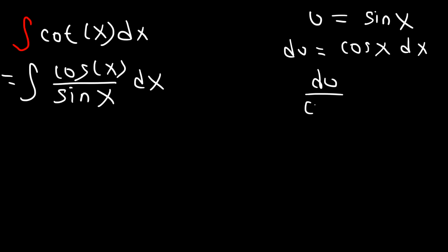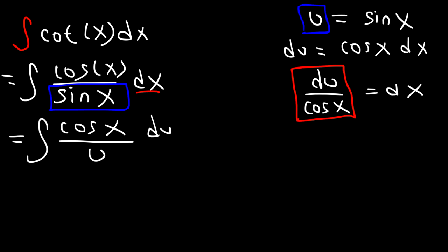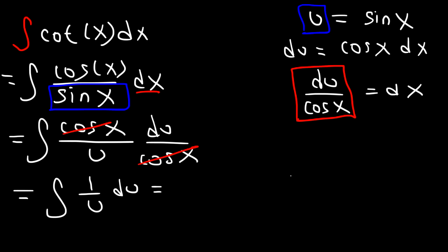Solving for dx gives du divided by cosine. Let's replace sine with the u variable and replace dx with du over cosine. We have the integral of cosine x divided by u times du divided by cosine. We can cancel cosine, and this becomes the integral of 1 over u du, which is the natural log of u plus C, and u is equal to sine.